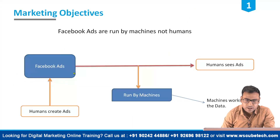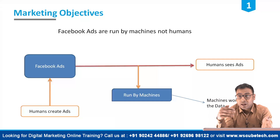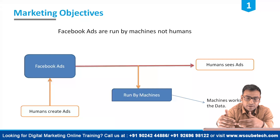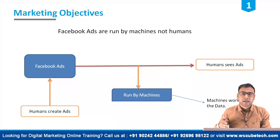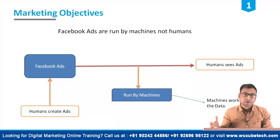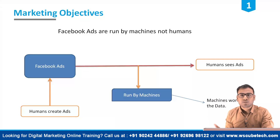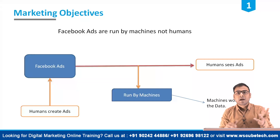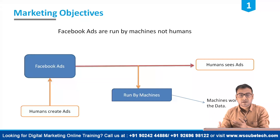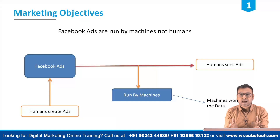Facebook ads are run by machines, not humans, and machines work on data. That data is captured by your different activities on Facebook. For example, if you are watching a video related to sports, Facebook will identify that you have some interest in sports. If you are liking any Facebook page based on sports, Facebook gets a signal that this profile has some interest in sports. This is how Facebook collects its data.